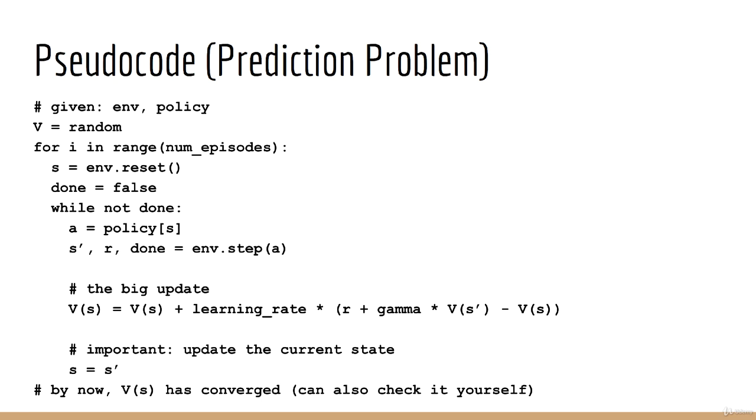Then we enter a loop which plays a predetermined number of episodes. Alternatively, you could also run the loop until you find that V(s) converges, or in other words settles on some value and doesn't deviate from it. Inside the loop, we begin playing an episode. The first thing we do is call env.reset, which resets the environment and puts us back into the initial state and returns that initial state. We'll call it s. Next, we initialize a done boolean flag to false. This boolean flag will get set to true when we've completed an episode. Next, we enter a while loop that completes when done becomes true.